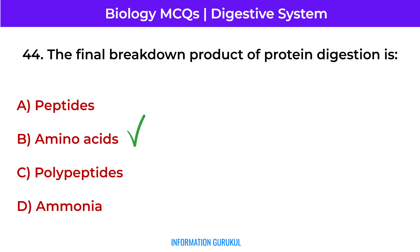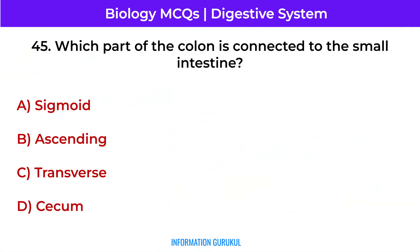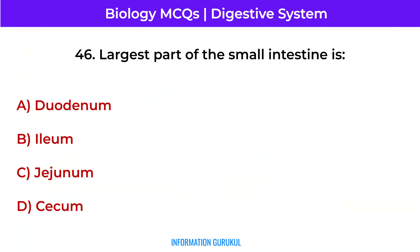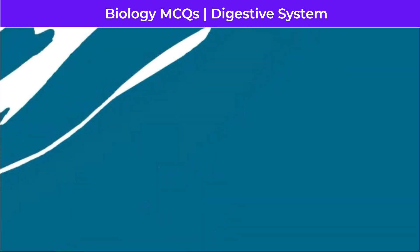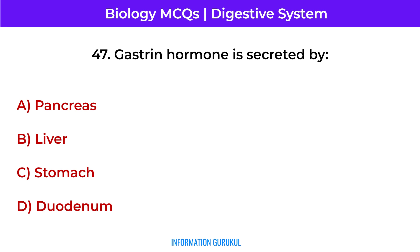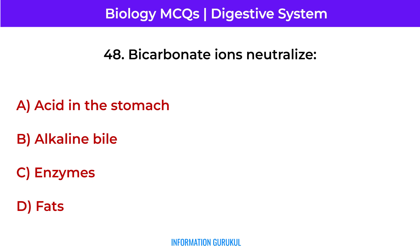The final breakdown product of protein digestion is amino acids. Which part of the colon is connected to the small intestine? The cecum. The largest part of the small intestine is the ileum. Gastrin hormone is secreted by the stomach. Bicarbonate ions neutralize acid in the stomach.